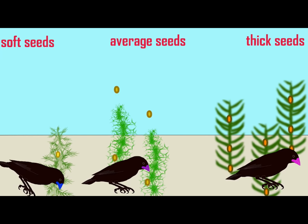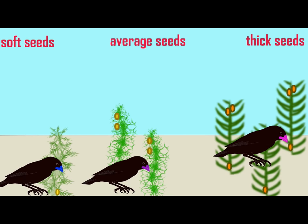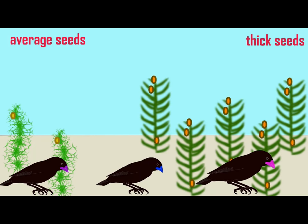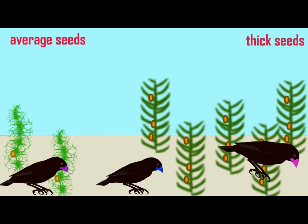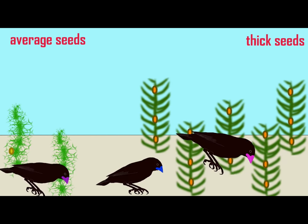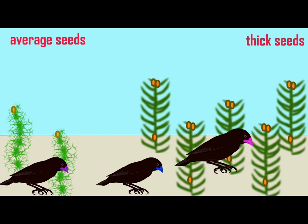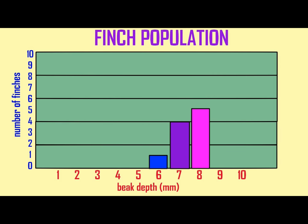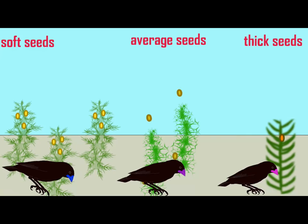On one side of the mountain range, drier habitats could increase the frequency of thick seeds and thus favor finches with thicker beaks,